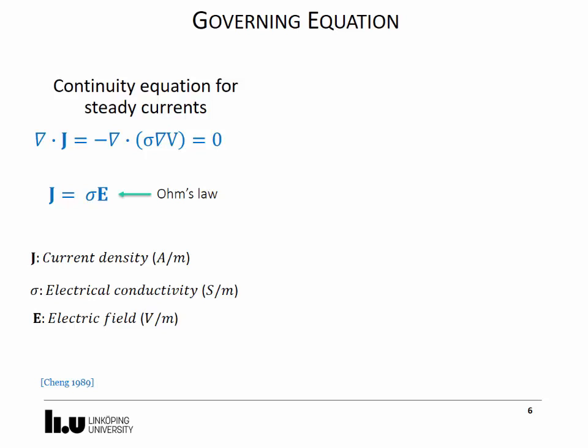The electric field is computed inside the brain model and is mathematically described by the continuity equation for steady currents, where del or nabla is the differential operator, j the current density, and sigma the electrical conductivity.